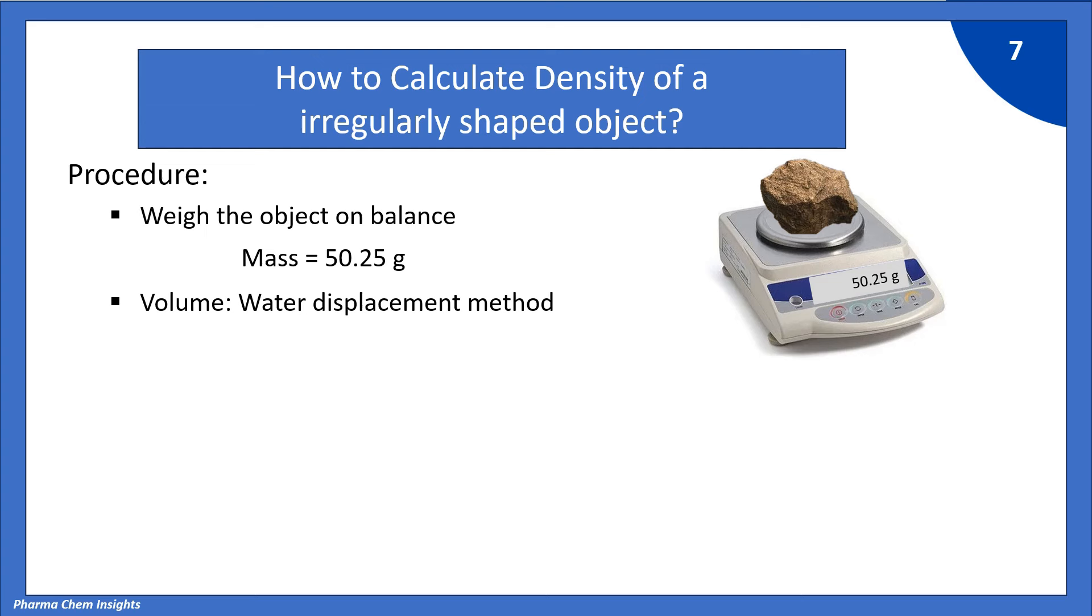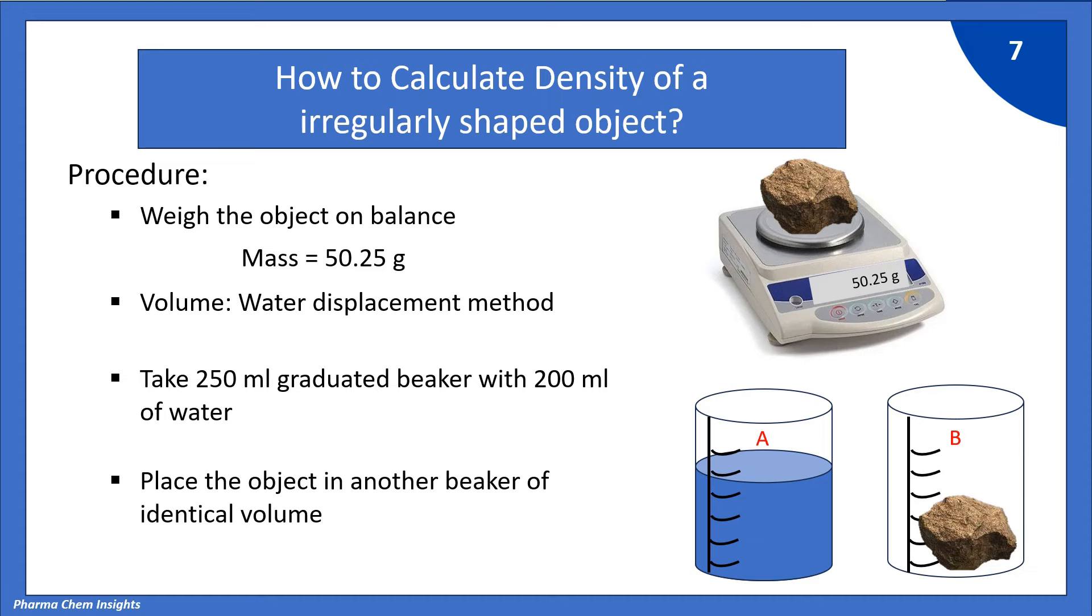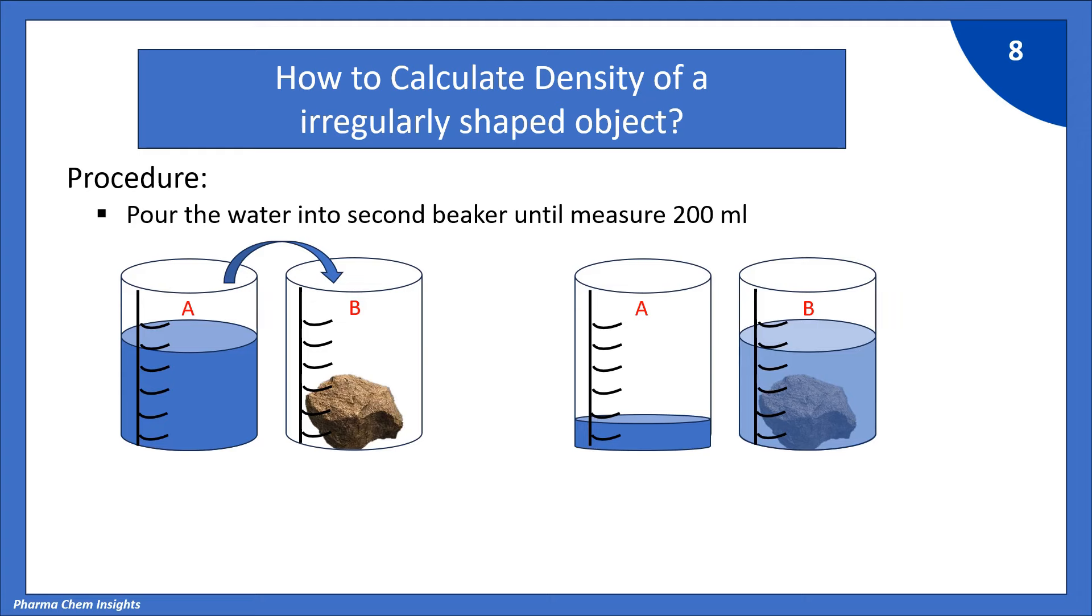Volume is determined by water displacement method. For this, first take 250 ml graduated beaker with 200 ml of water. Place the object of irregularly shaped in another beaker of identical volume. Pour the water into second beaker i.e. from A to B until it measures 200 ml.